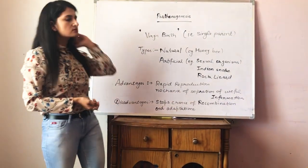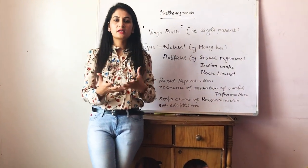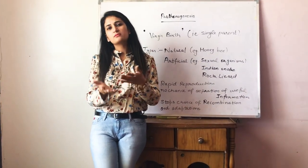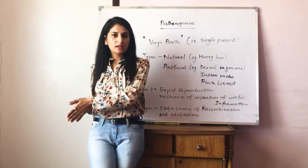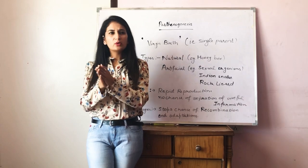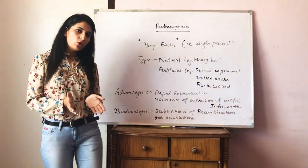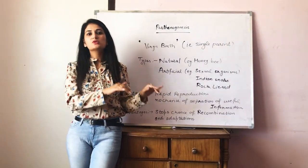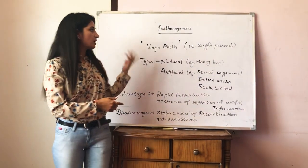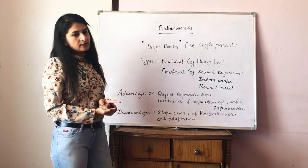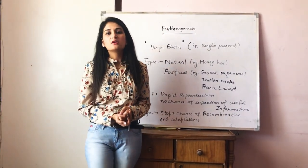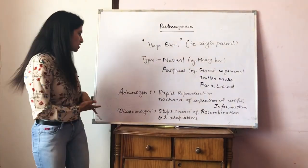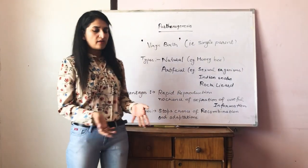In artificial parthenogenesis, the organisms are sexual organisms — they have both males and females in their family. But we reproduce an organism with similar characters by artificially introducing a fertile ovum into a female. We take a fertile ovum from one female and introduce it into another female. Examples of this process include a smaller Indian snake and the rock lizard.